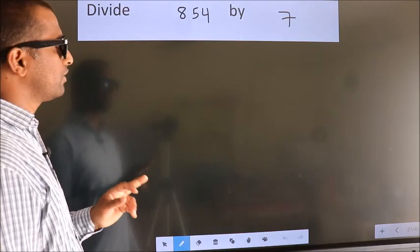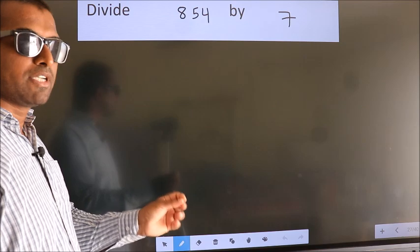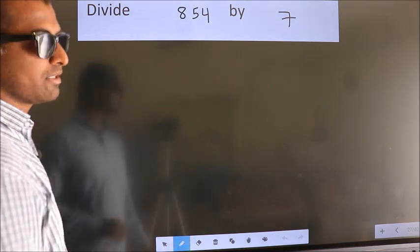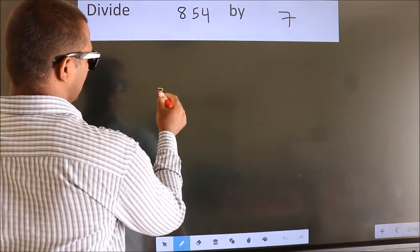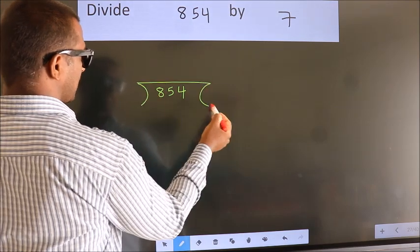Divide 854 by 7. To do this division, we should frame it in this way. 854 here, 7 here.